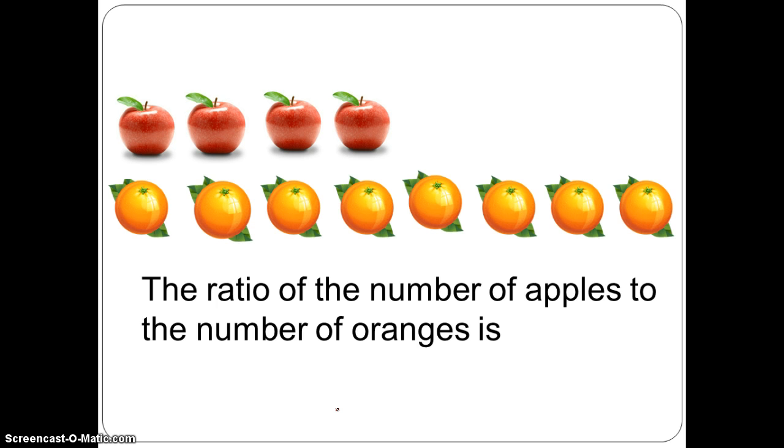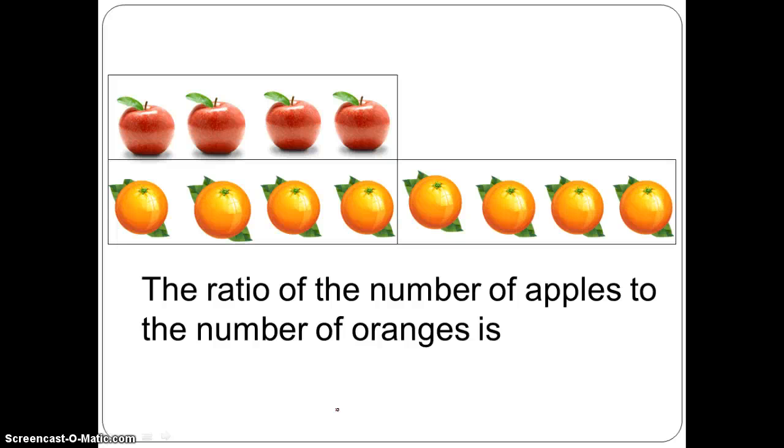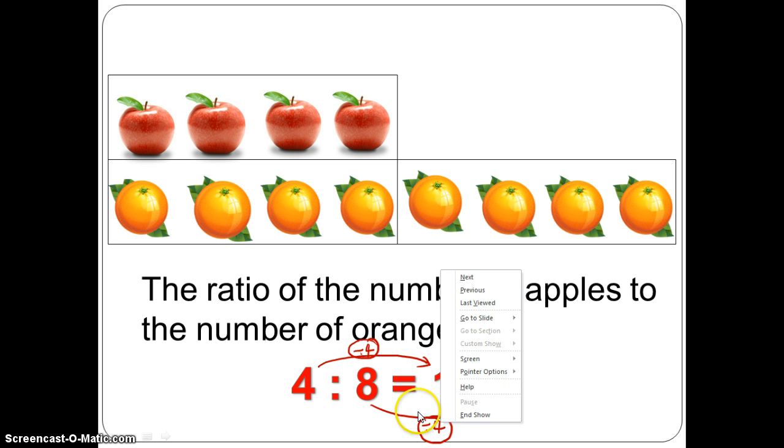If we group the apples in groups of 4, we can simply say that the ratio of the apples to the number of oranges is 1 is to 2. So because we group them in groups of 4, we can take the term 4 divided by 4 is 1 and 8 divided by 4 is 2. 4 is also a common factor of the term 4 and 8.